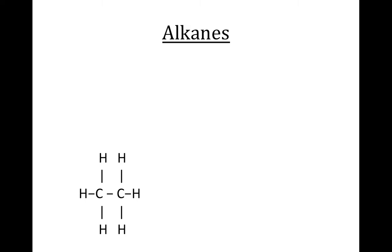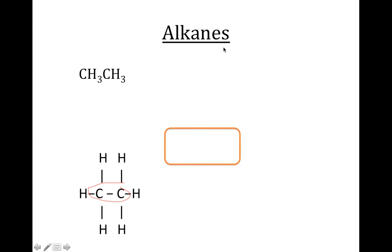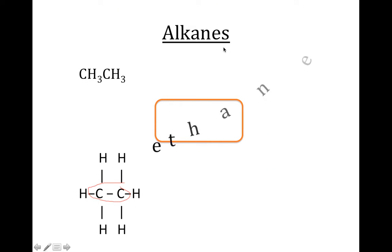We start off with a super easy one. What we see is we have two carbons in our longest sausage. These hydrogens around aren't considered branches — we just fill in with hydrogens to make sure we have four bonds around every carbon. That's why you've got to remember about bonding. The prefix for two in carbon land is 'eth,' and it's an alkane, so we combine 'eth' and 'ane,' and incredibly, we end up with ethane.